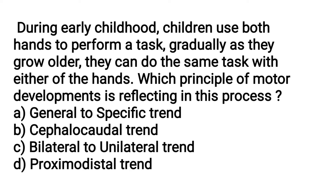In early childhood, children use both hands to perform a task. As they grow older, they can do the same task with either hand — that means moving from both hands to one hand. The answer is bilateral to unilateral trend.